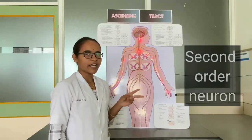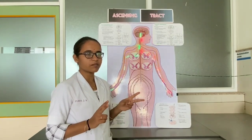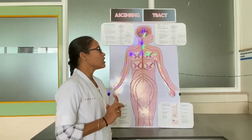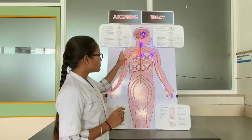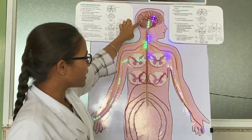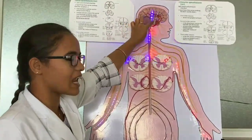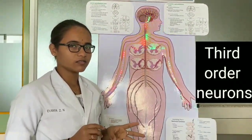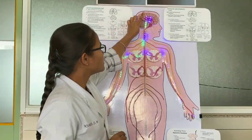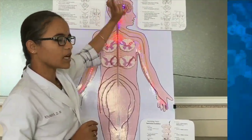Second order neurons are the sensory neurons which are present in the posterior horn of the spinal cord. These neurons transmit impulses from the spinal cord to the subcortical area below the cortex, up to the level of the thalamus. Third order neurons travel from the subcortical area — that is, from the thalamus — to the cerebral cortex.